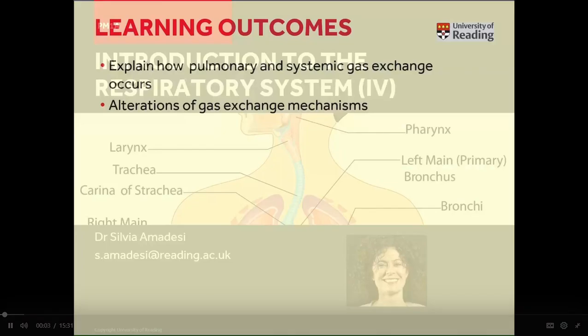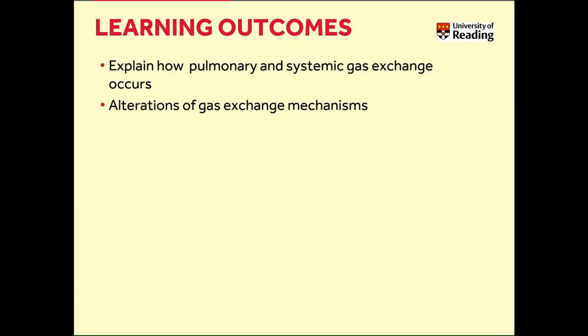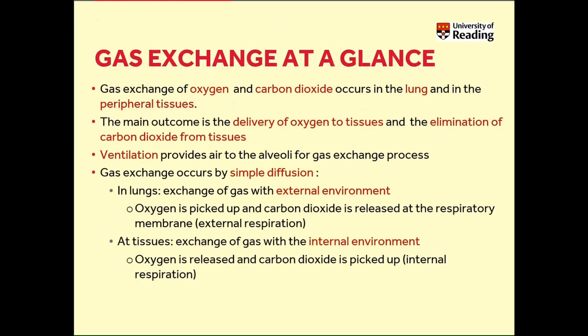In this screencast, I would like to talk to you about pulmonary and systemic gas exchange and alterations of gas exchange mechanisms. Gas exchange of oxygen and carbon dioxide occurs in the lung and in the peripheral tissues. The major aim is to deliver oxygen to tissue and eliminate, get rid of carbon dioxide from tissues.